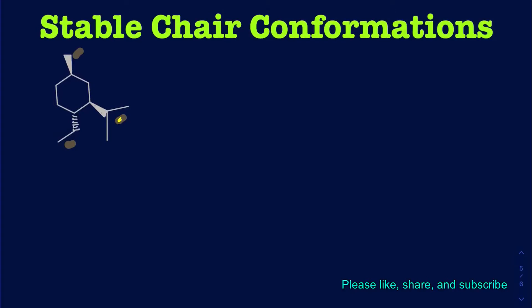I want to go ahead and number those, and it doesn't really matter how you number those. This is just for my own convenience — I'm not numbering according to the IUPAC rule. I'm just trying to figure out at what positions you're going to have those substituents when I draw my chair conformations.